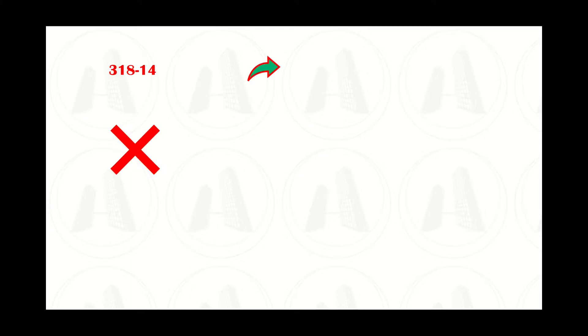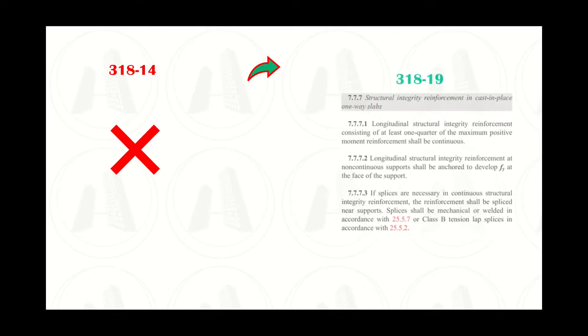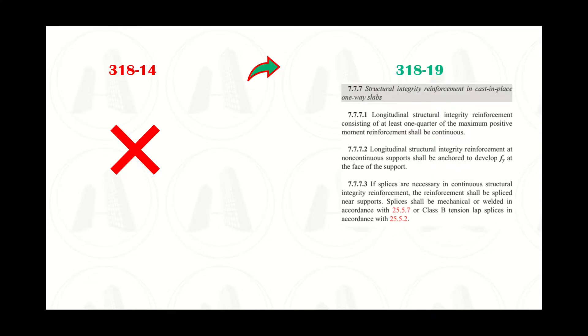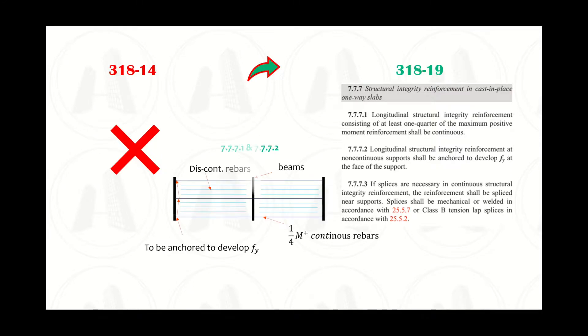Another change in the code is regarding structural integrity reinforcement. Structural integrity reinforcement has been added for cast-in-place one-way slabs. It is intended to provide a buffer against disproportional collapse in case a portion of the slab collapses. This provision is in line with what we already have for beams.